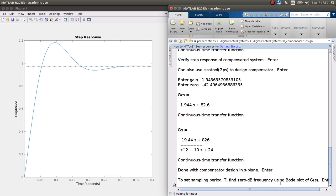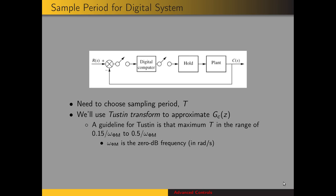Now we're going to convert this to the discrete-time domain. Here is a block diagram showing our discrete-time system. In order to convert, we need to choose a sampling period. We're going to use the Tustin transform to approximate the compensator transfer function. One guideline is that the maximum sampling period should be in the range of 0.15/omega_0dB to 0.5/omega_0dB, where omega_0dB is the zero dB frequency in radians per second.